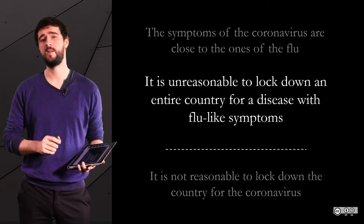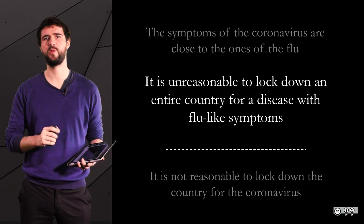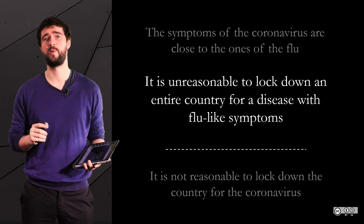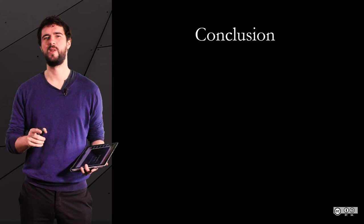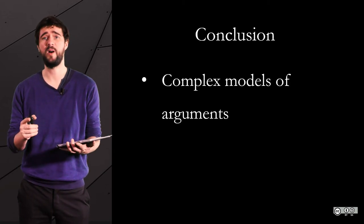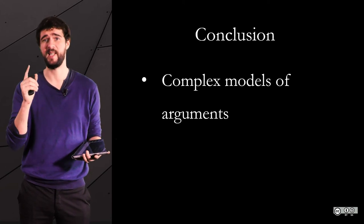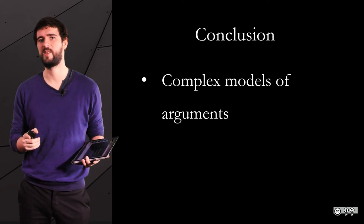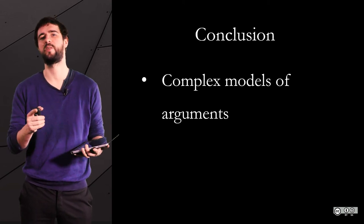By the way, to control for the placebo effect, you would need to expose both groups, the experimental and the control group, to the apparatus. Some apparatus would actually emit waves and some would not. Both the scientists and the subjects should ignore which devices emit and which do not. It is called a double blind.